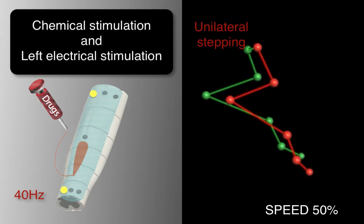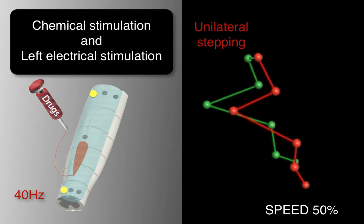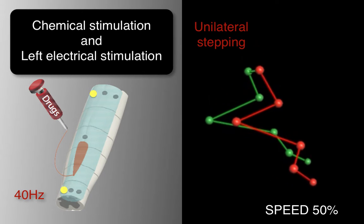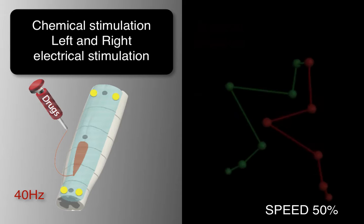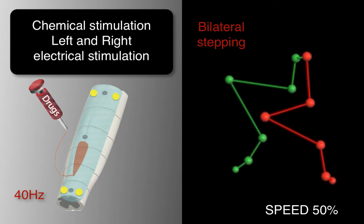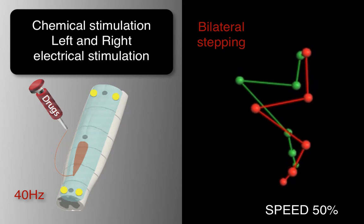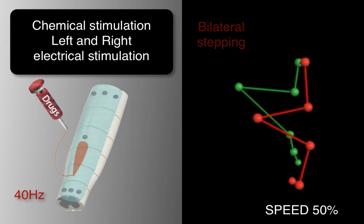When adding unilateral electrical stimulation, rats instantly regained movements on the stimulated side. Concurrent chemical and bilateral electrical stimulation promoted weight-bearing locomotion of both legs.